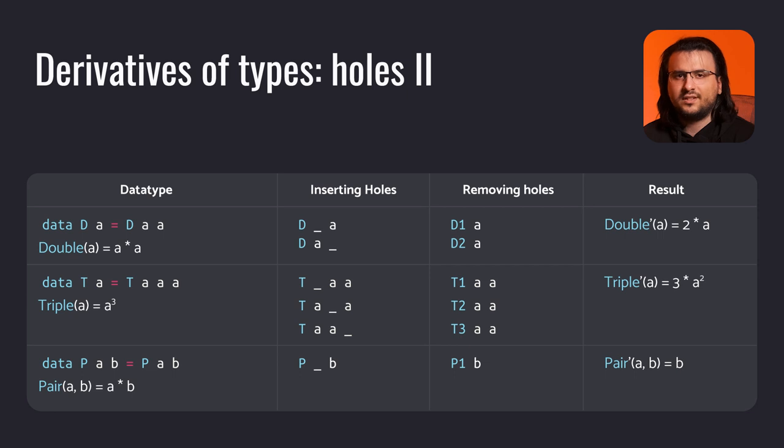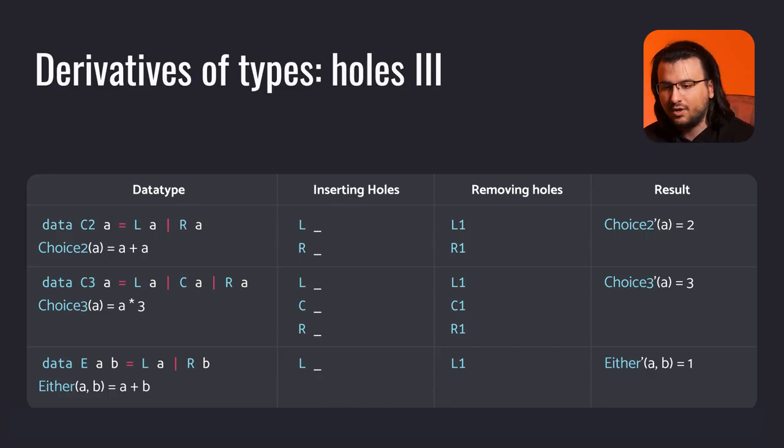Now let's explicitly state that we focus on type parameter a, which is necessary because our next example, pair, introduces another type parameter b. We insert the only hole in the data constructor, then remove it, and we're left with p2, which accepts b. So the new math expression is b. The examples from the next slide are similar, except we're working with sum types. Choice 2 is a sum type with two constructors, each accepting a value of type a. For every constructor, we substitute a hole for a. After removing the holes, we're left with two nullary constructors, collectively representing a math expression of 2.